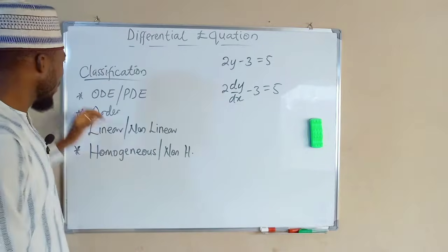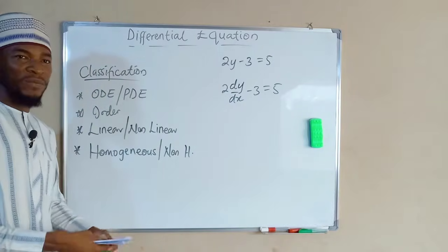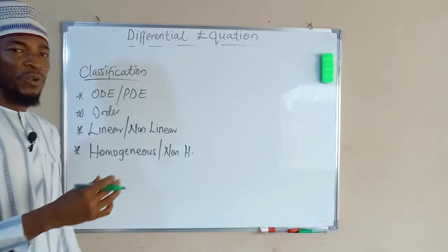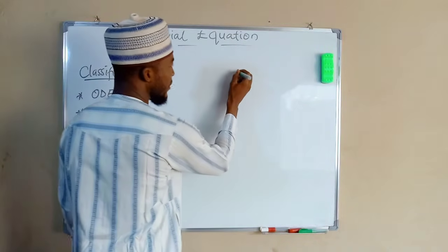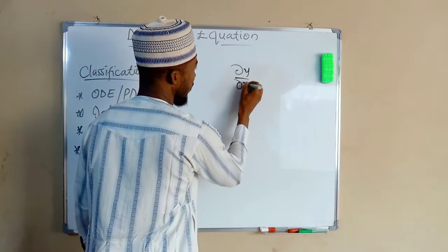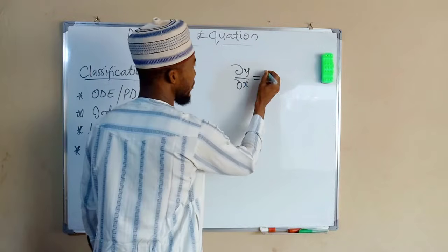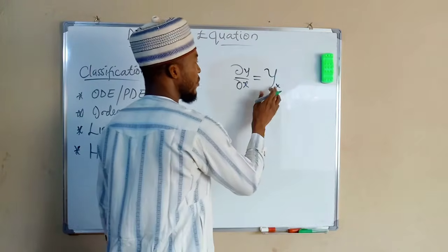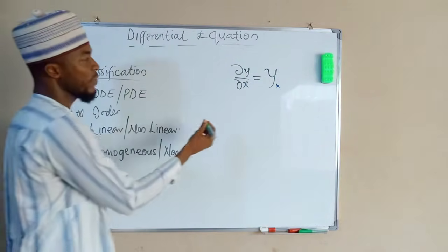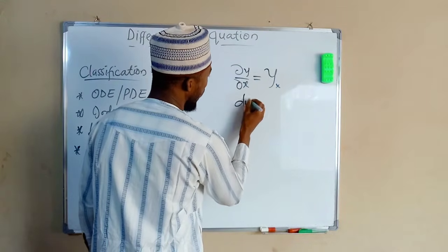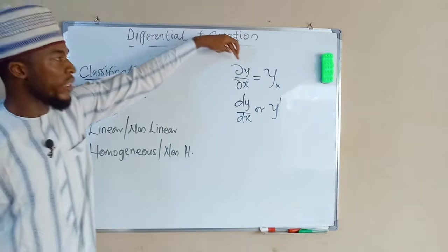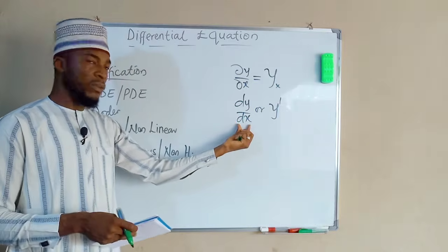A differential equation may appear as an ordinary differential equation or a partial differential equation. What differentiates the two is that an ordinary differential equation does not contain partial derivatives. Partial derivatives are denoted by the delta notation, such as delta y over delta x, or in subscript form as y subscript x for the first derivative. Ordinary derivatives are written as dy over dx or y prime.